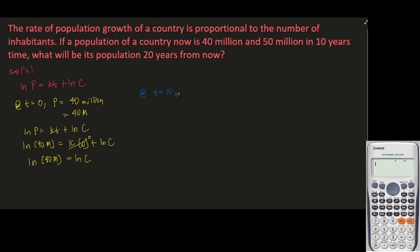For the second condition, at t equals 10 years, the population grows to 50 million. Using the same equation, ln P equals kt plus ln C, we substitute P equals 50M and t equals 10: ln(50M) equals 10k plus ln C. Since ln C equals ln(40M), we transpose ln(40M) to the left side of the equation.